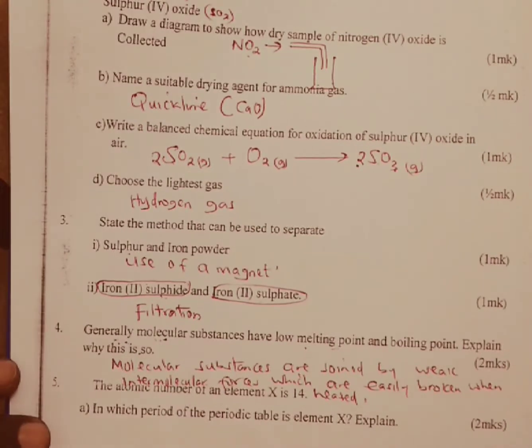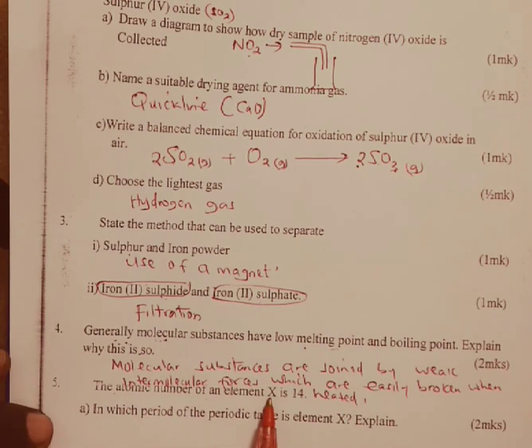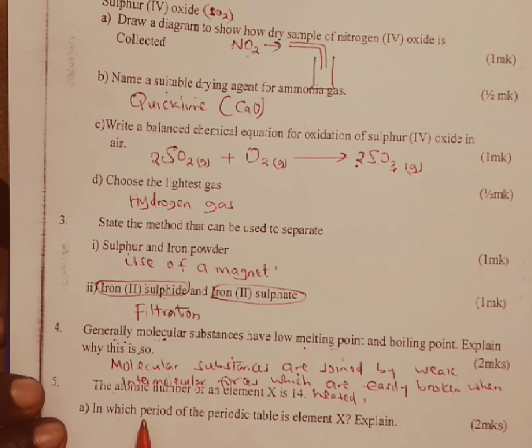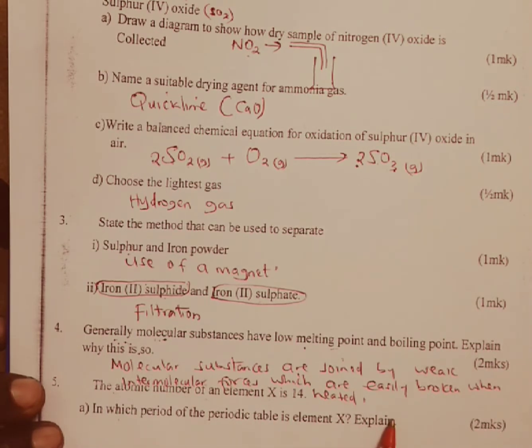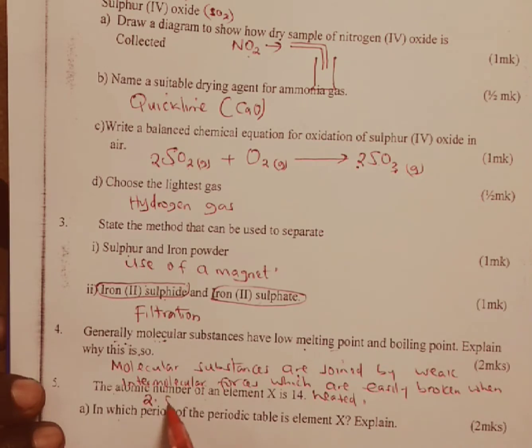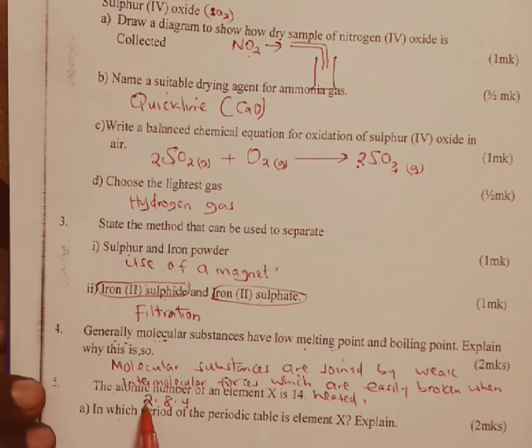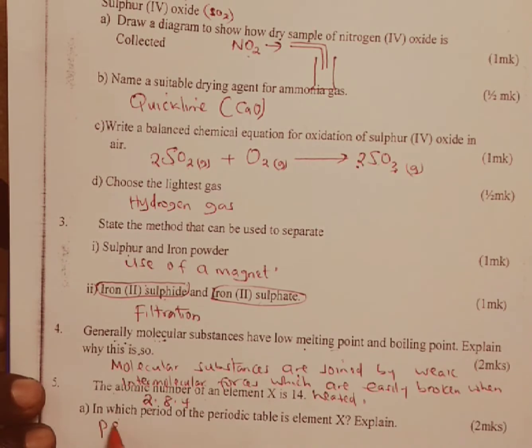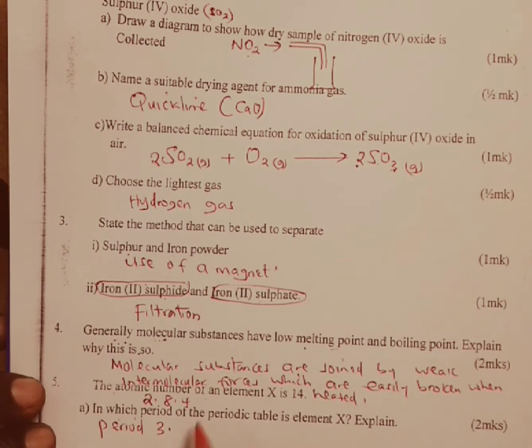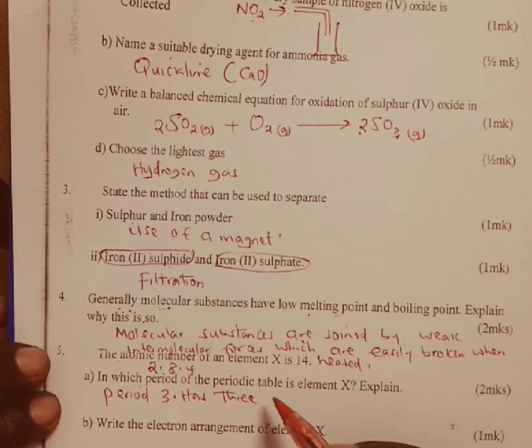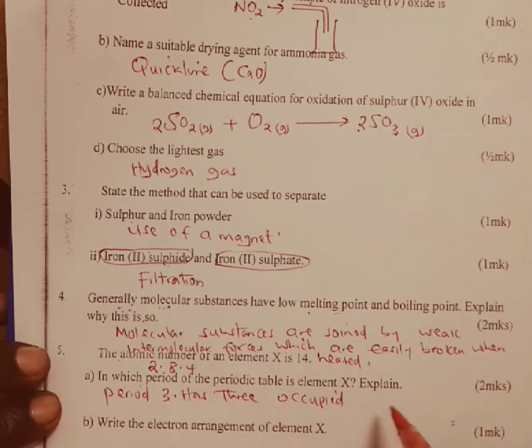Question five: the atomic number of an element X is 14. In which period of the periodic table is element X? Explain. Element X being in atomic number 14 is going to have an electron arrangement of 2, 8, 4. Clearly you can see it has 3 occupied energy levels, and any element that has 3 occupied energy levels is found in period 3.